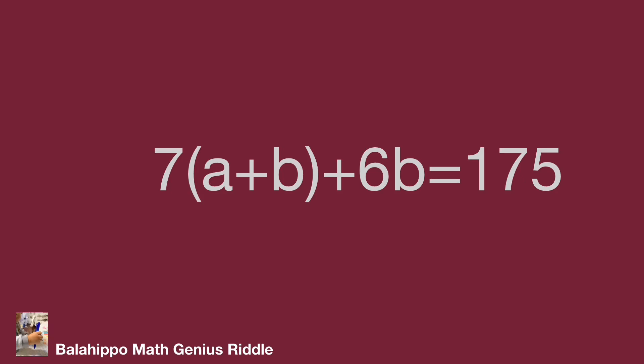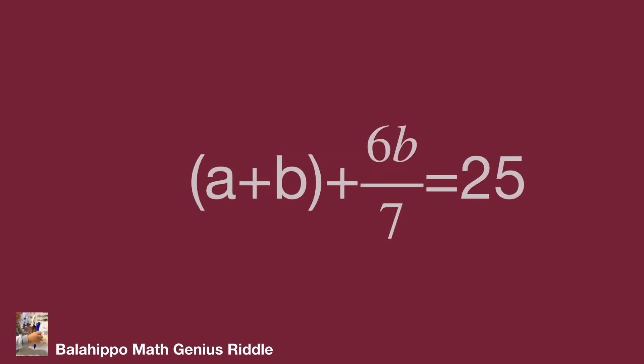Then divide 7 to both sides of our equation. We get bracket a plus b bracket plus 6b over 7 equals 25. In this new equation, we get two pieces of information. First, a and b are positive integers. Since a plus b plus 6b over 7 equals 25, and 25 is a positive integer...